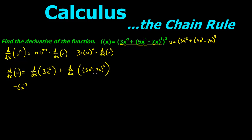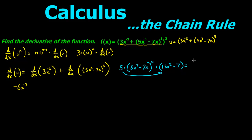To find the derivative of this piece we need to break it down. We take the exponent first and say 5 times the original function, which is 5x cubed minus 7x, and then we come down by 1 power, times the derivative of the inside, which is 15x squared minus 7. Then we multiply this 5 in, giving us 75x squared minus 35, times 5x cubed minus 7x to the fourth power.